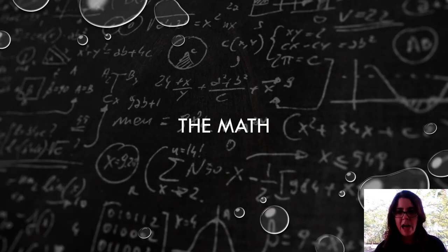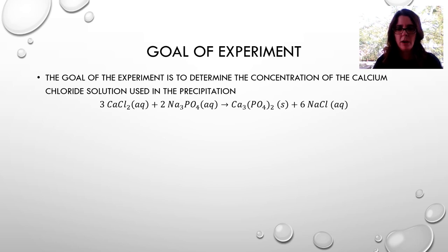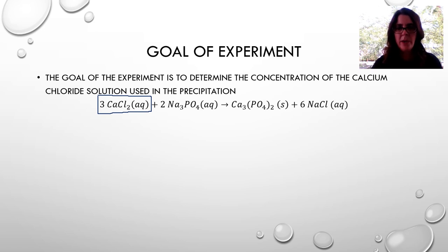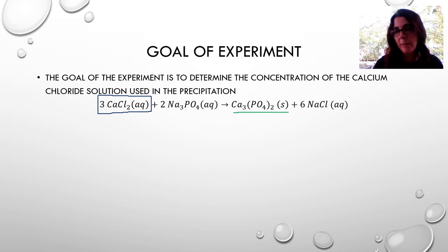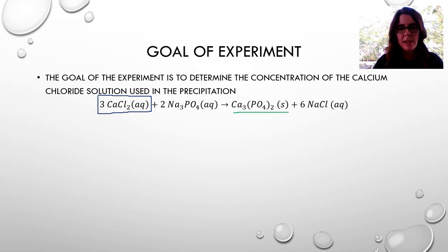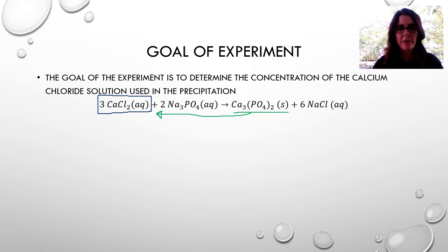There's a fair amount of math in this lab, and we're working backwards. Our goal is to determine the concentration of the calcium chloride solution — we know the sodium phosphate concentration but not the calcium chloride. We'll form a solid precipitate, filter it through filter paper, dry it, weigh it, and then back-calculate to find the concentration of calcium chloride.